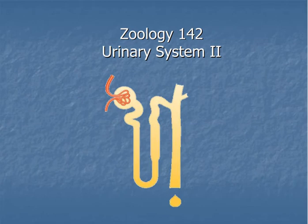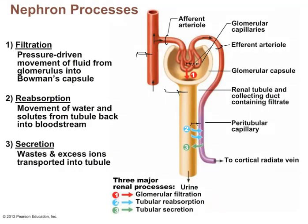Welcome back to Zoology 142 Online — this is Part 2 of our lecture on the urinary system. Nephrons are the functional units of the kidneys, removing waste products from blood while conserving things we want to keep like water and glucose. The three nephron processes are: filtration — pressure-driven movement of fluids from the glomerulus into the Bowman's capsule; reabsorption — taking stuff from the renal tubule and putting it back in the bloodstream to avoid losing water or glucose in urine; and secretion — moving waste from the bloodstream back into the tubule to excrete things like urea and uric acid.